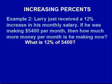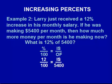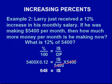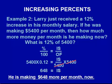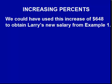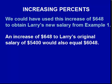So our percent equation becomes: what is 12% of $5,400? We use equivalent fractions, substitute in our values, and when we solve for the unknown we get an answer of just $648. This is how much more money Larry is making per month. We could also use this increase of $648 and add it to his original salary of $5,400 to arrive at $6,048 — another way to do example one.